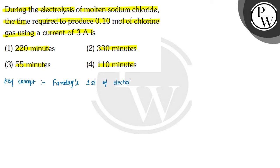In this we can calculate W equals ZIT, and further it can be written as W equals E divided by 96500 multiplied by I multiplied by T. So here number of moles are given, so we can write number of moles of chlorine gas